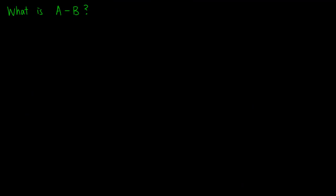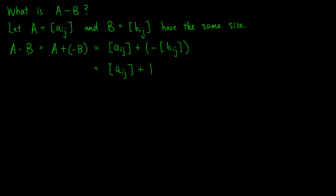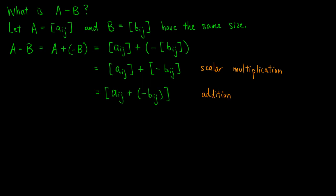Now, we will talk about A minus B. Given the definition of matrix addition, it should not be hard to guess the definition of subtraction. Let A be the matrix with entries Aij and B be the matrix with entries Bij, having the same size. A minus B can be written as A plus negative B, which equals the matrix with entries Aij plus negative Bij. By the definition of scalar multiplication, we can put the negative sign inside the matrix. By the definition of matrix addition, this is equal to the matrix with entries Aij minus Bij. So, taking the difference of two matrices means taking the difference of the corresponding entries.